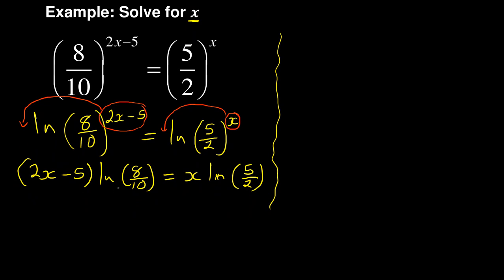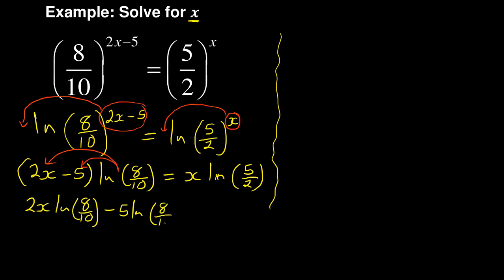Now I need to collect like terms, so I expand this part. The ln multiplies through and I open the bracket, giving me: 2x·ln(8/10) minus 5·ln(8/10) equals x·ln(5/2).